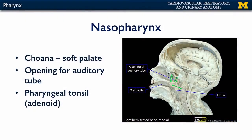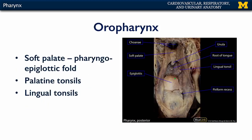Along the superior margin of your nasopharynx is your pharyngeal tonsil or adenoid. This is a posterior view of the pharynx in its entirety. We can see the nasopharynx — there are the choanae — and there's the soft palate.